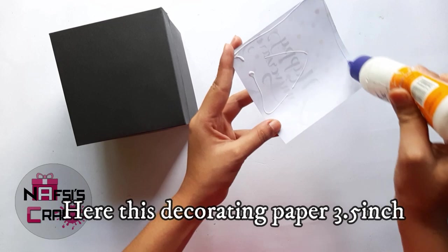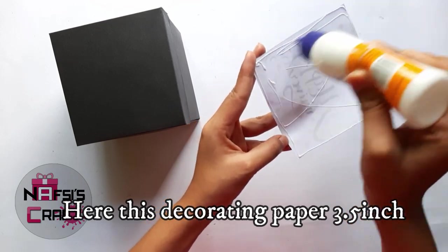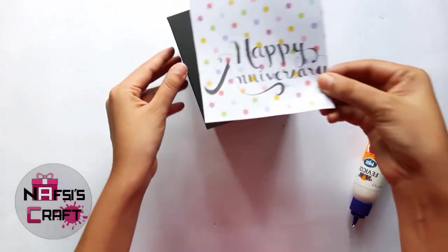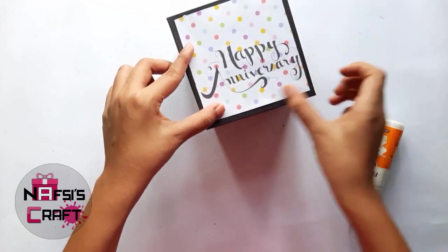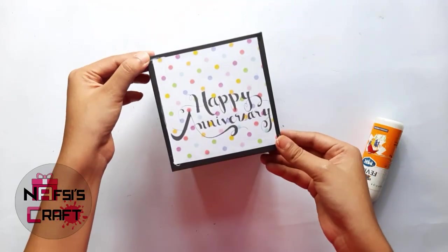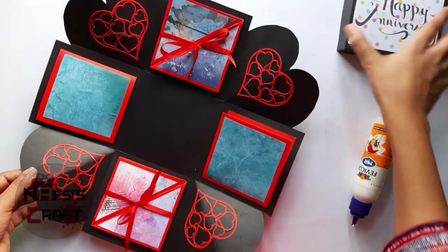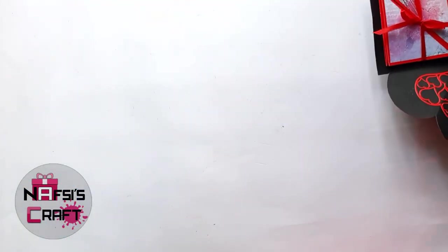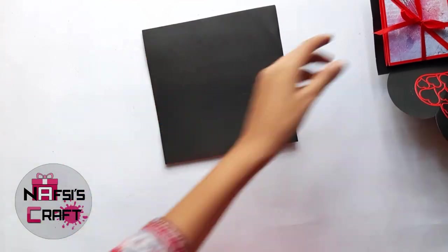Now here I am taking another paper that is 3x5 inch. You can also use any kind of color paper. My box is ready. Now I'm gonna work with the small one.